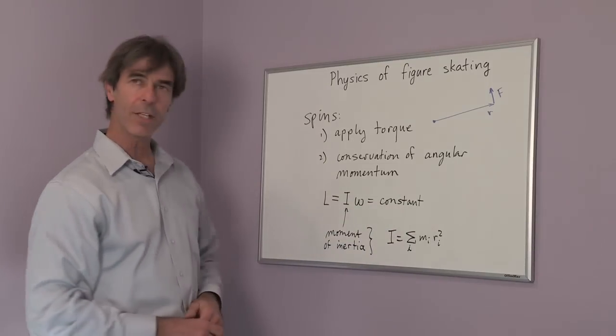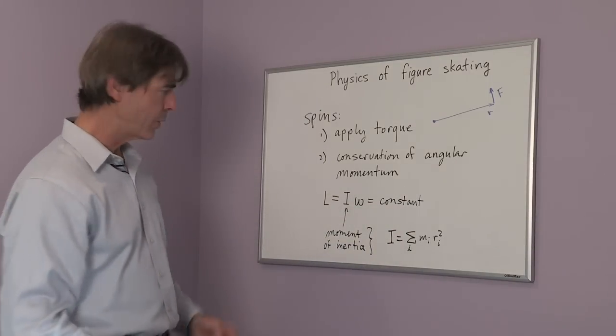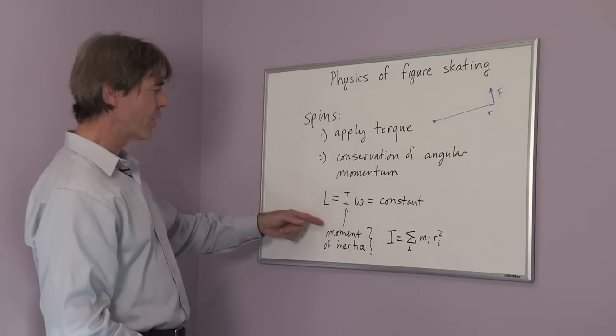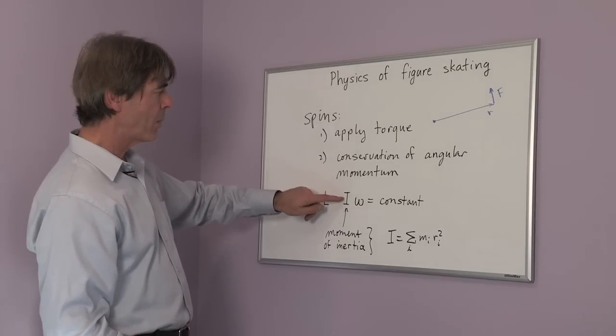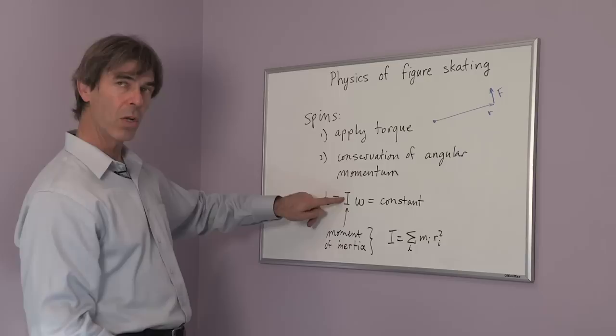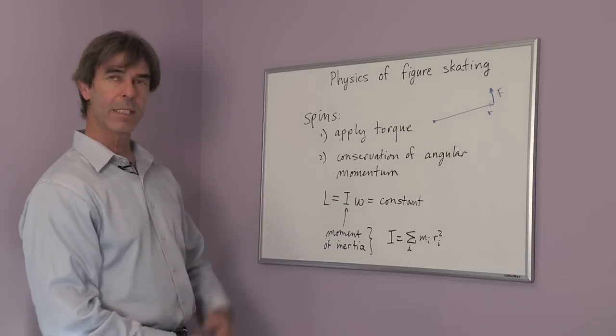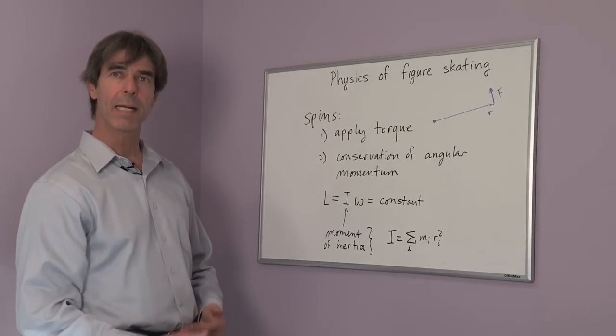What a skater does is to change his or her moment of inertia so that when the moment of inertia becomes smaller, the spin frequency becomes larger. And that's how they speed up their spin.